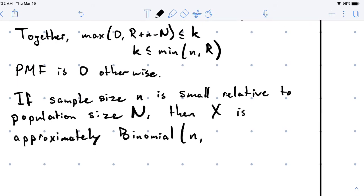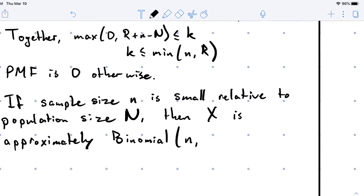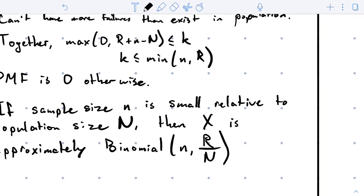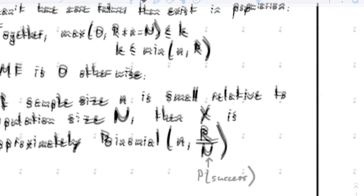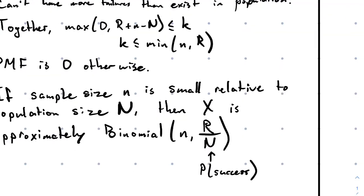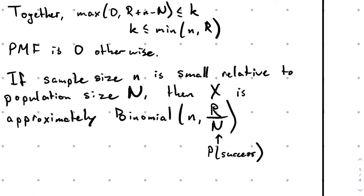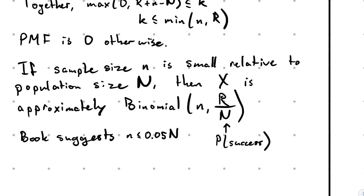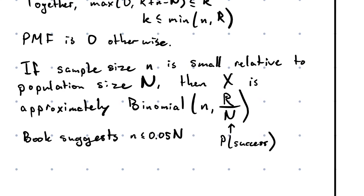The other thing to note is if the sample size is small relative to the population, then X is approximately binomial with probability of success equal to capital R over capital N — the proportion of successes in the population.